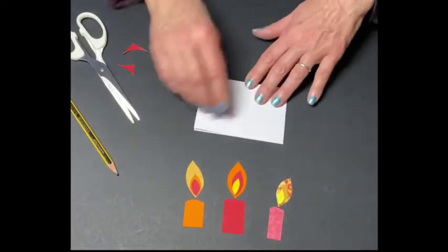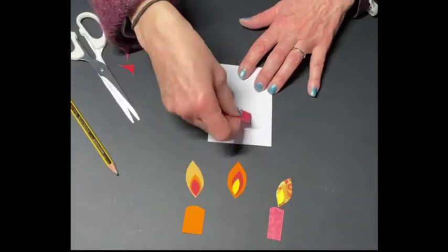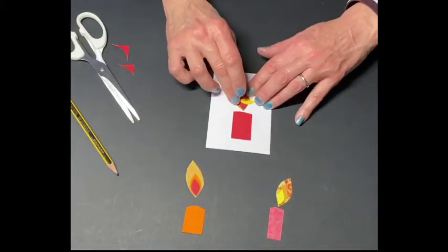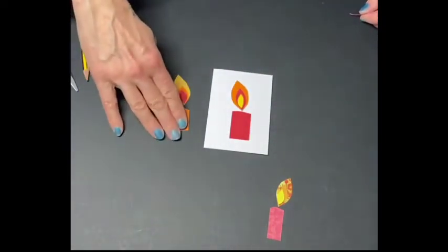If you want to then stick them on the card, make your own card by folding some paper in half. Again, play with the layout. You can move them around at this stage. So you could put them where you want. When you're happy, you could then stick them down.